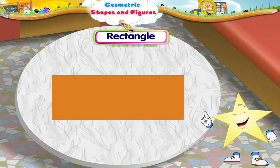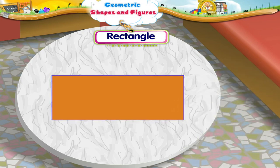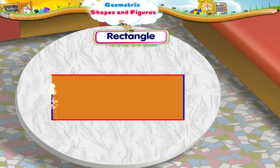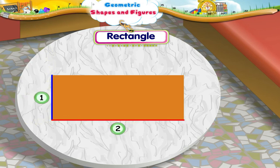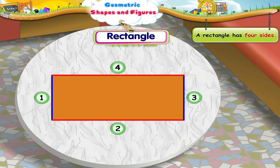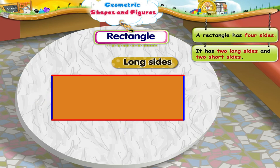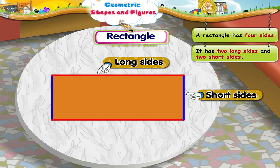Let us learn more about rectangles. Look at this piece of paper. It is in the shape of a rectangle. Let us count its sides: one, two, three, four. A rectangle has four sides. It has two long sides and two short sides.